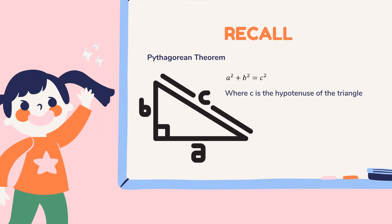So first, let's recall what the Pythagorean Theorem is. The Pythagorean Theorem is denoted by the formula a squared plus b squared is equal to c squared, where c is the hypotenuse of the triangle. The word hypotenuse tells us that it is the longest side of the triangle, and the longest side is always the one opposite to our 90-degree angle.